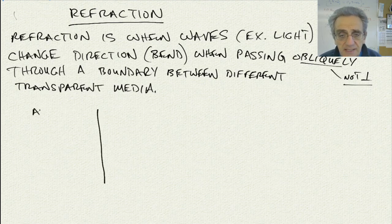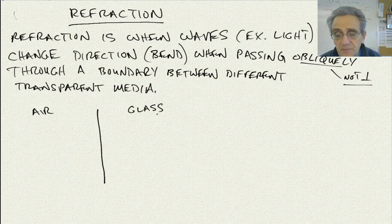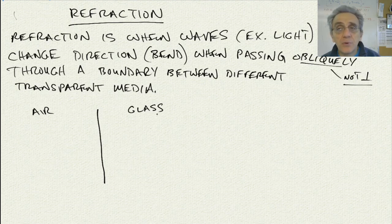Let's give an example. Let's say we have air on one side and glass on the other. You're probably in a room that has windows, and light can travel through windows.